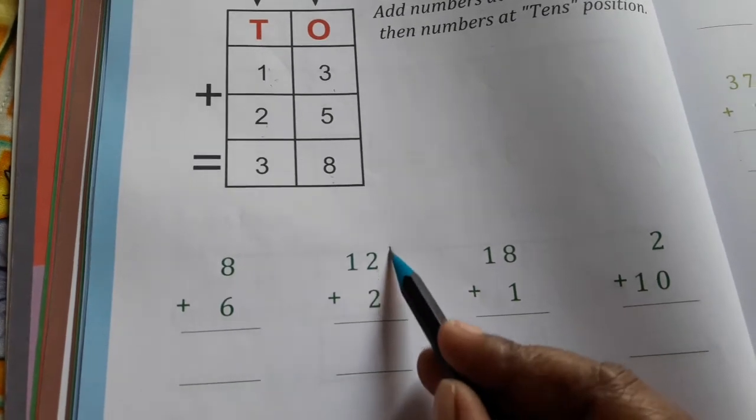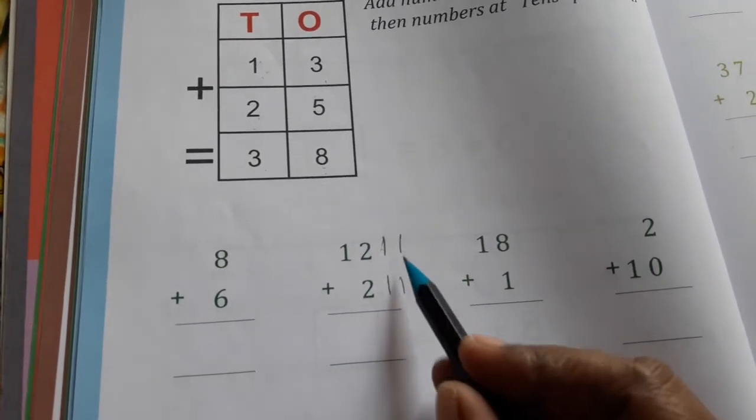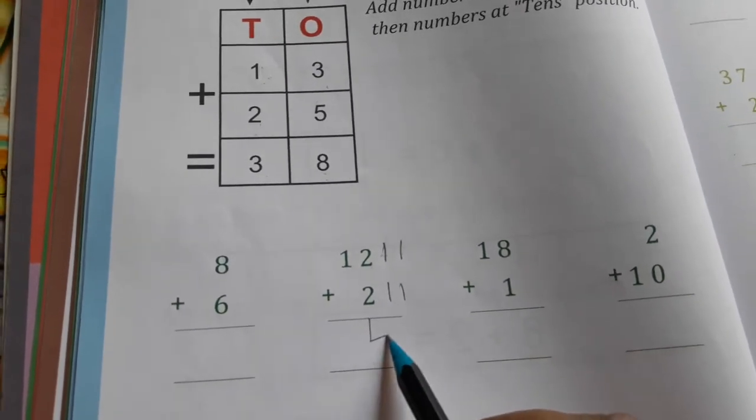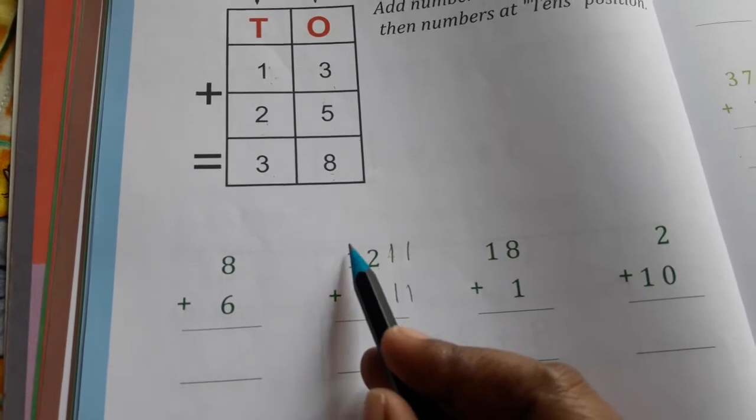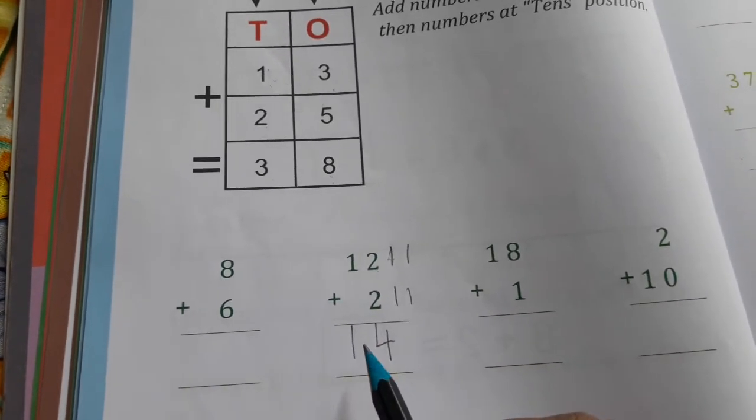Here are 2 numbers: 12 and here 21, 22. Counting: 1, 2, 3, 4. We have 4 and here 1. So how much is it? 14.